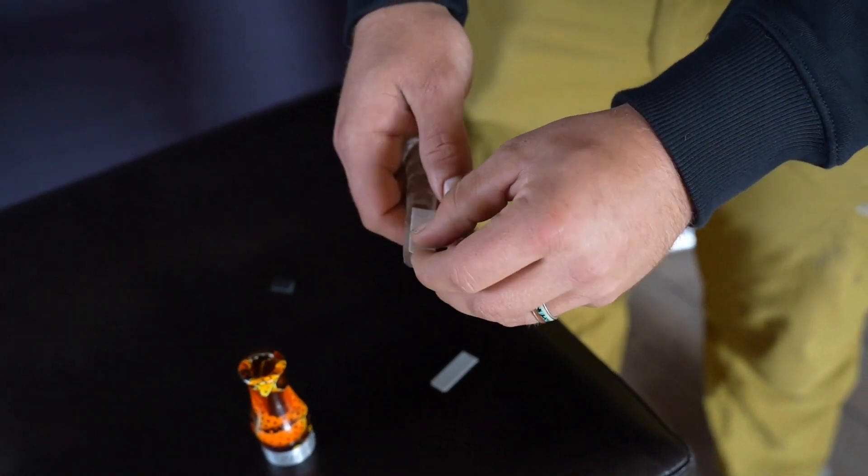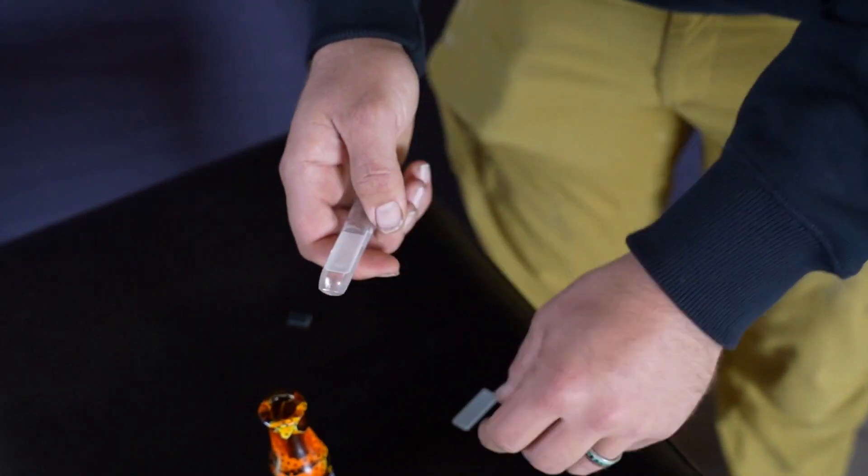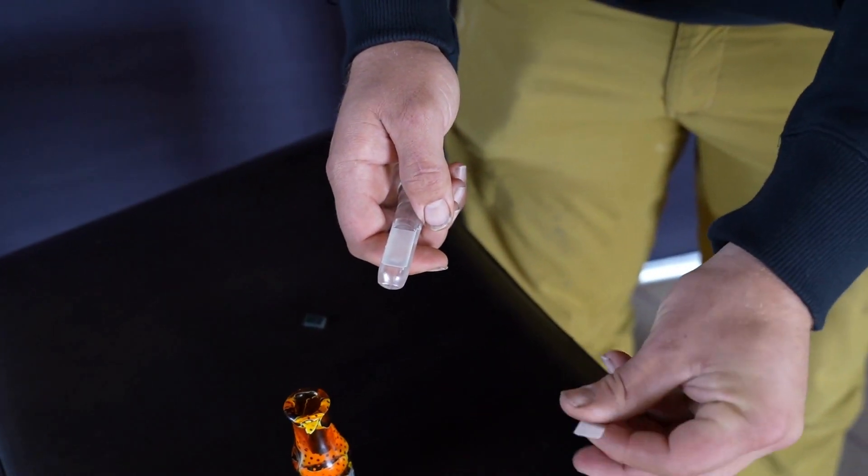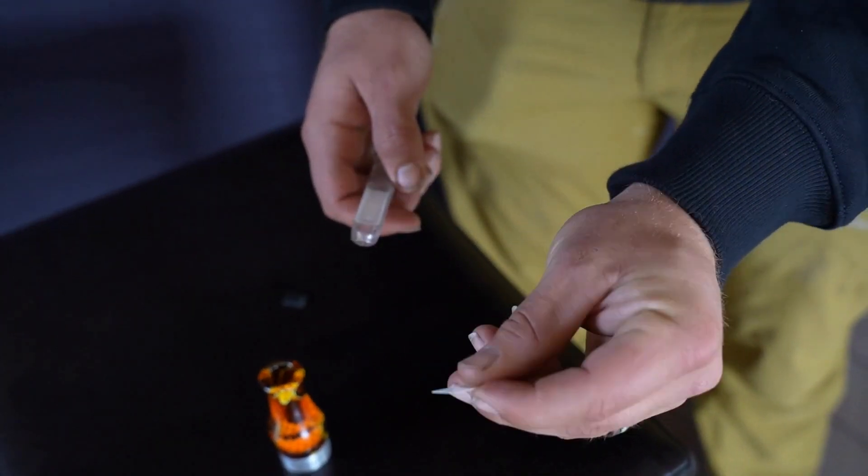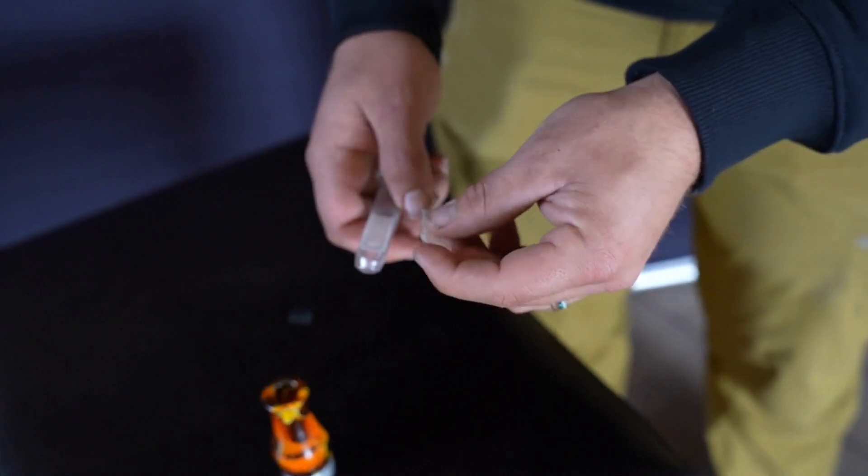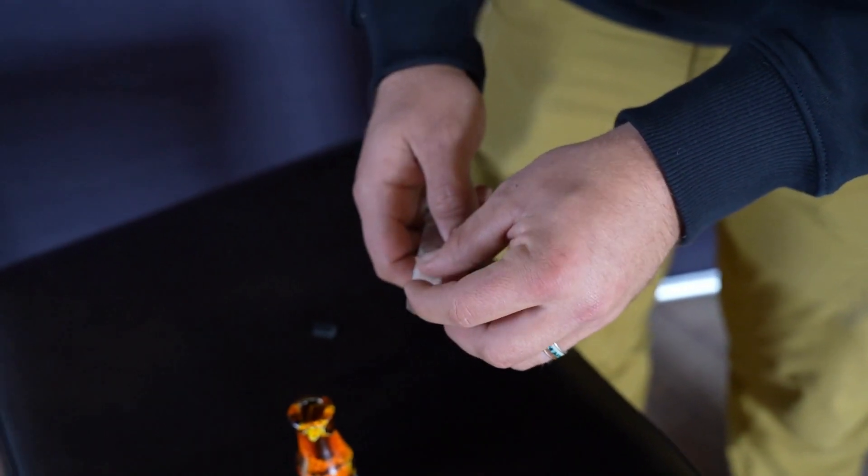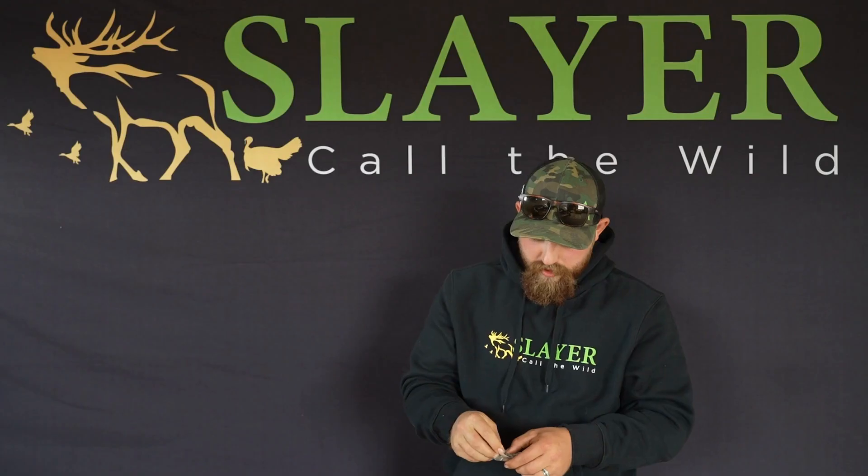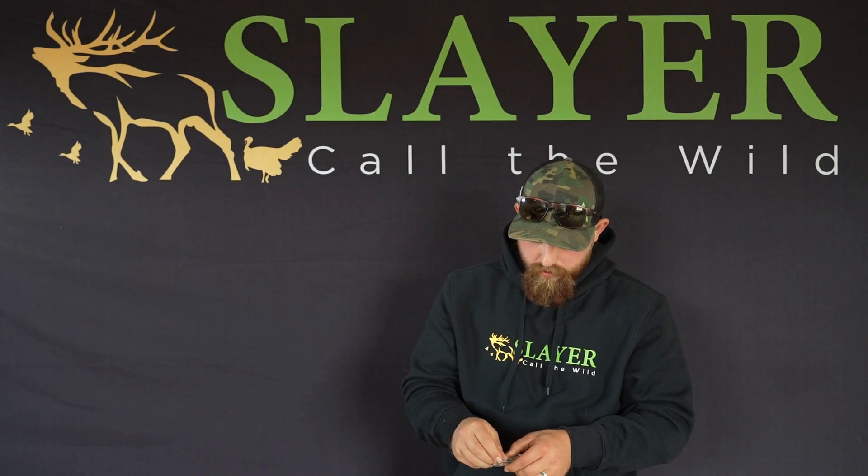When you're placing your reeds back on your insert, you want to make sure they're as centered as possible over that tone channel. And you have a dimpled reed on top. It's going to be just a little bit shorter. The dimple is always going to go down to allow a little bit of space in between those two reeds so they can both do their job.